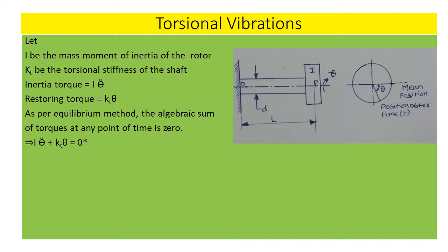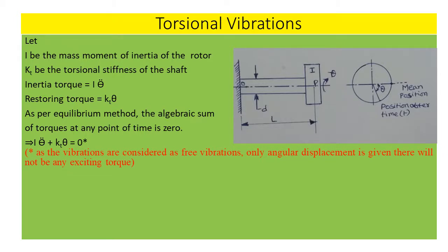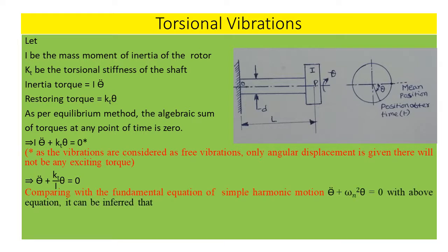It implies: I·theta double dot + KT·theta = 0. As the vibrations are considered free vibrations, only angular displacement is given — there will not be any exciting torque. This simplifies to: theta double dot + (KT/I)·theta = 0. Comparing with the fundamental equation of simple harmonic motion, theta double dot + omega_n²·theta = 0.